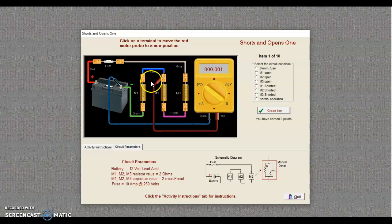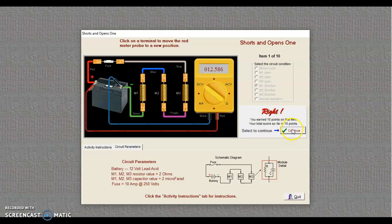My load drop consisted of module 2 and module 3. So in this assessment, module 1 is shorted. And so I'll click M1 shorted. I'll grade the item. Now before I hit grade item, I like to return to my source over here. I'm going to grade the item. I'm good. And I can continue.